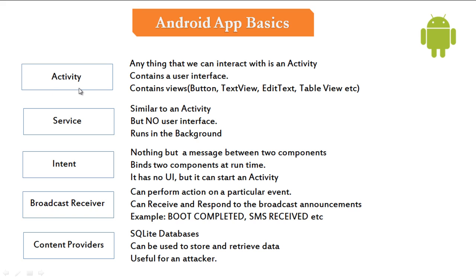The first one is activity. Anything that we can interact with is an activity. If you have opened your app and you are trying to touch it, then it is an activity. It contains a user interface with views like buttons, text views, edit text, table views, etc. The next one is service. A service can be treated as an activity with no interface — you cannot see what's happening, everything runs in the background. A classic example is your music player: you can start it and leave it while doing other things with your phone.